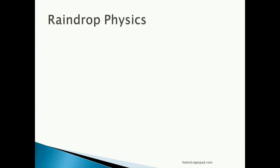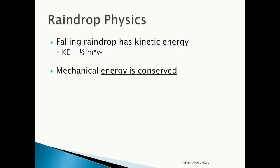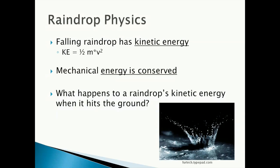Let's do some raindrop physics. Falling raindrop has kinetic energy. We know that kinetic energy is equal to one-half mv squared. We also know that mechanical energy is conserved. What happens to a raindrop's kinetic energy when it hits the ground? If you answer that the ground absorbs the impact and or that the ground is deformed, you're correct.